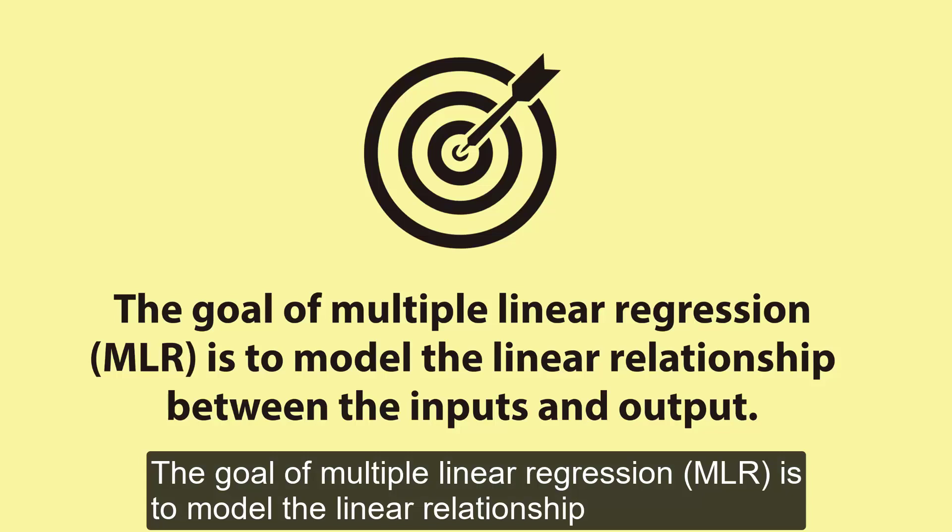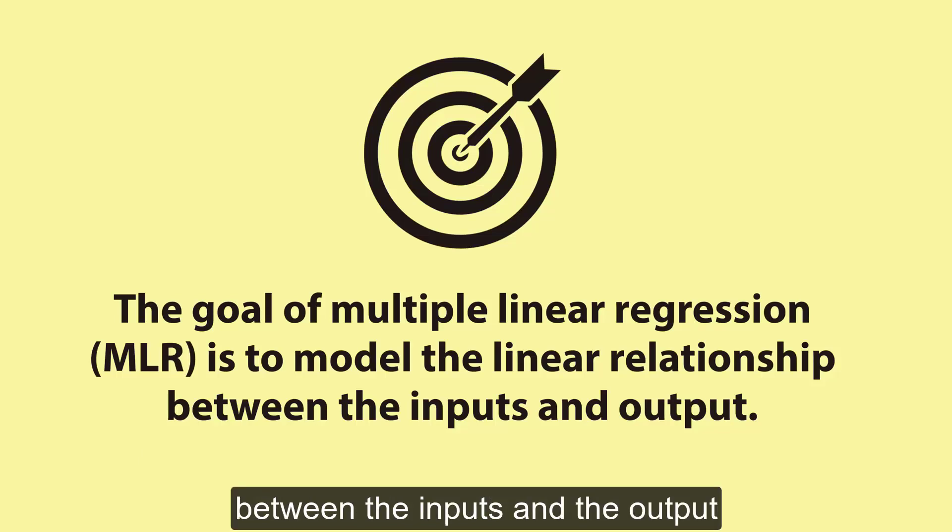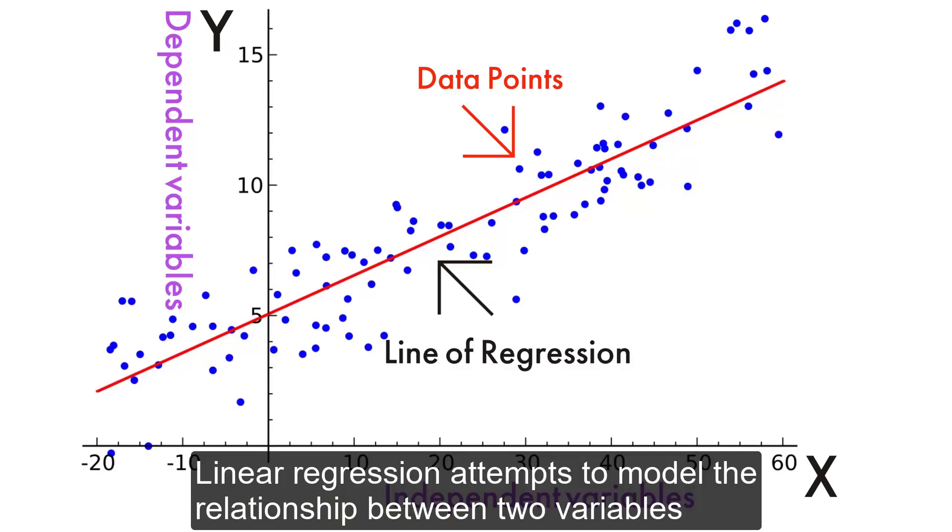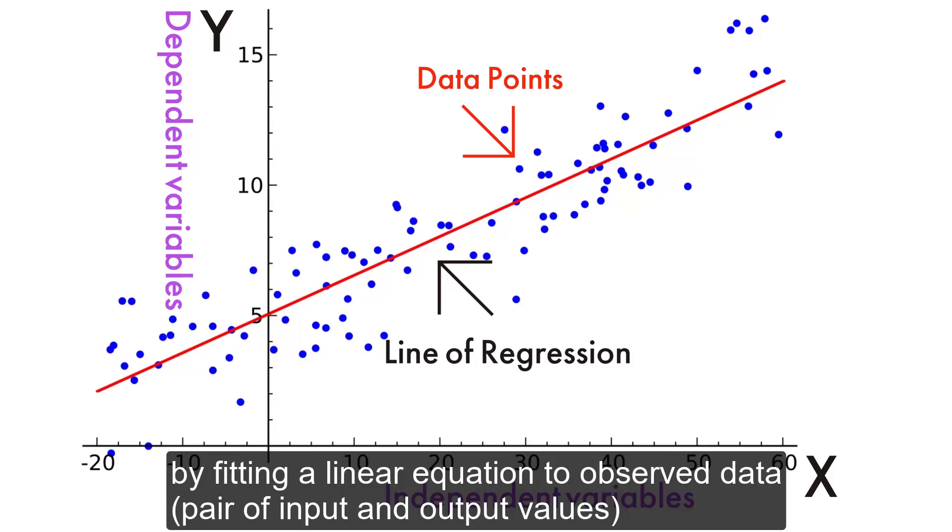The goal of multiple linear regression (MLR) is to model the linear relationship between the inputs and output. Linear regression attempts to model the relationship between variables by fitting a linear equation to observed data—pairs of input and output values.